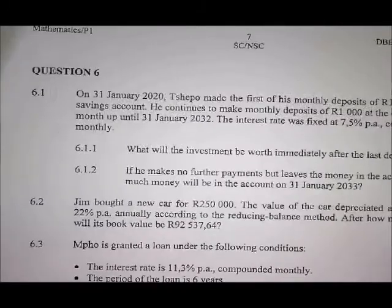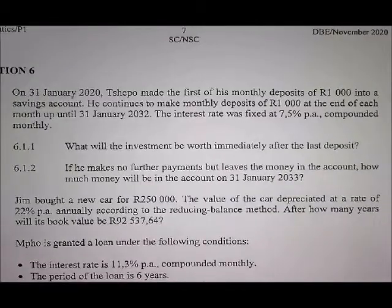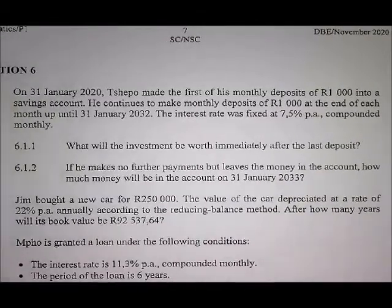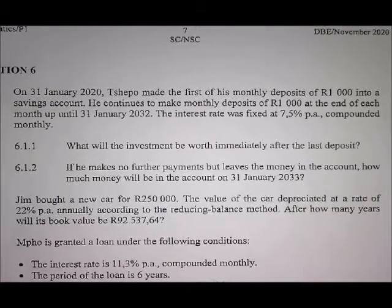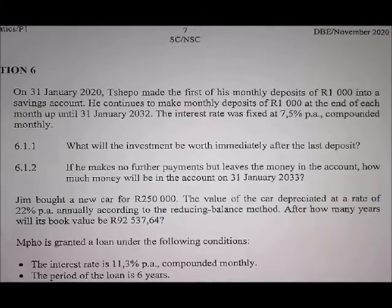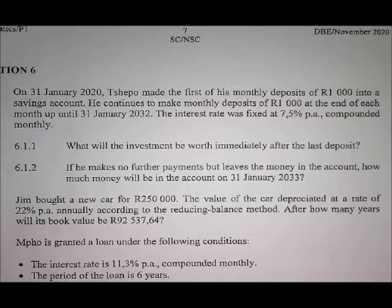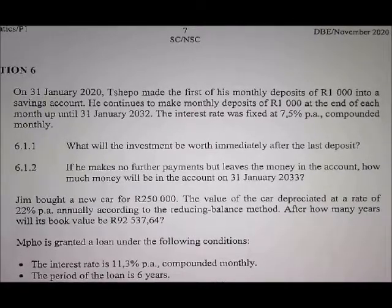Question 6.1. Now on January 2020, Chappel made the first of his monthly deposits of R1,000 into a savings account. He continues to make the monthly deposits of R1,000 at the end of each month, right up to the 31st of January, 2032. The interest rate was fixed at 7.5% per annum, compounded monthly.